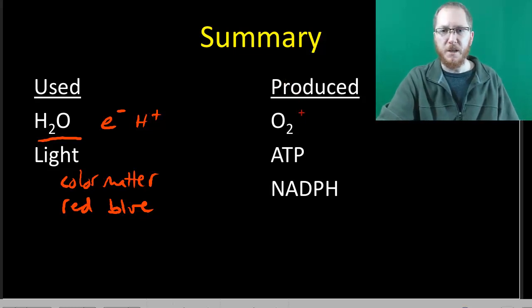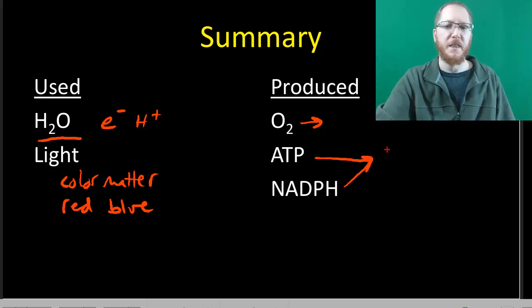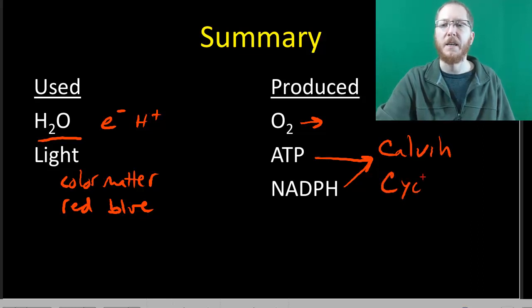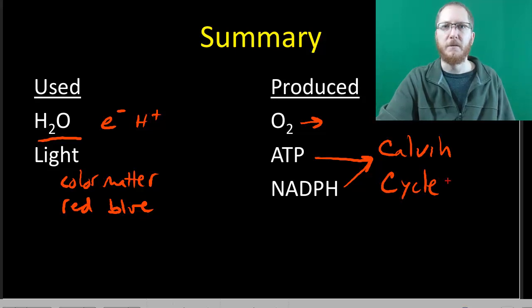And then what we're going to produce here is going to be oxygen, which was our waste. So that will be given off. And we're going to produce ATP and NADPH. Both of these are going to be energy molecules that we will need for the next set of reactions. So these guys are what we have to have so we can move on to the Calvin cycle. That's it for today. I hope you guys enjoyed it. Take it easy.